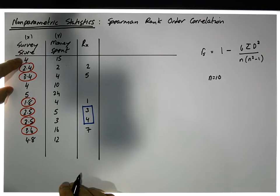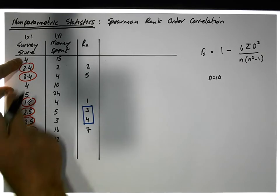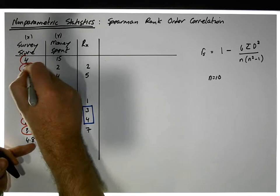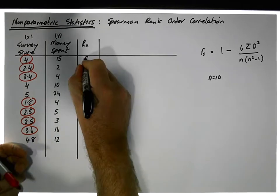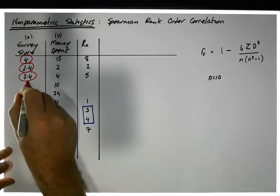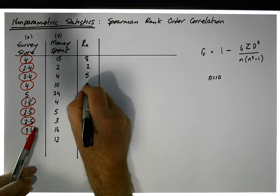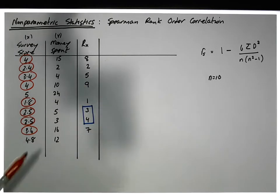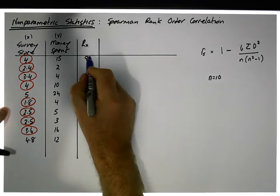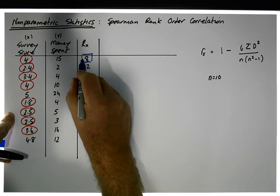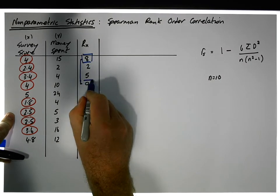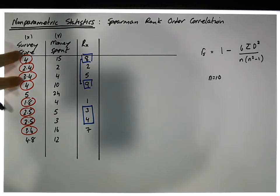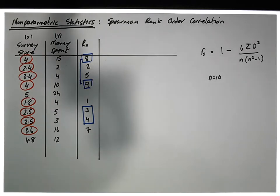There seems to be a four here, which gives us a rank of eight. The next largest value is this four here, which is ranked ninth. Let's keep in mind that these two values are the same values, although they've been given different ranks, and we'll deal with them in a moment.